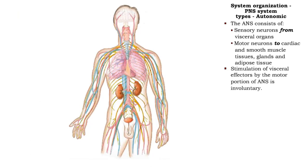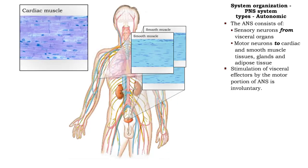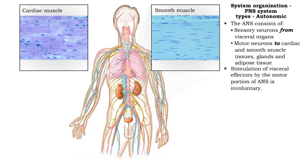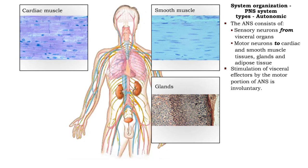The autonomic nervous system contains sensory neurons that convey information from visceral organs, as well as motor neurons that convey information to cardiac muscle, smooth muscle, glands, and adipose tissues.